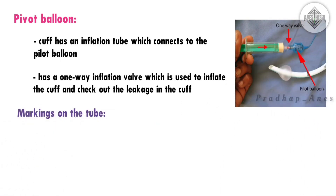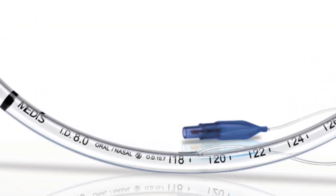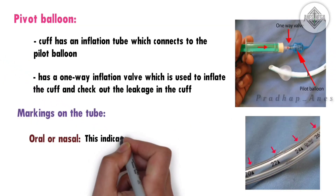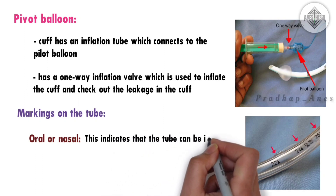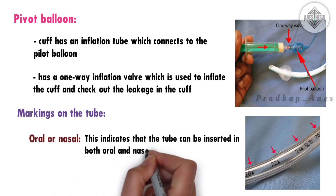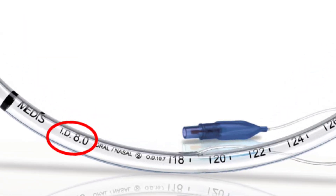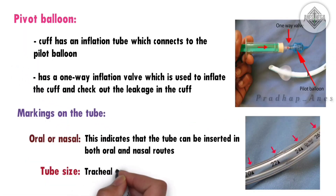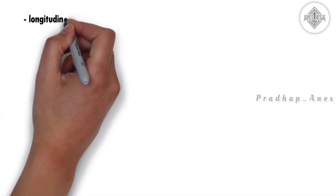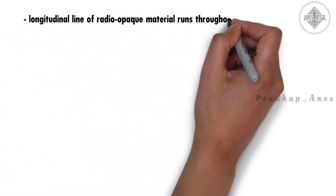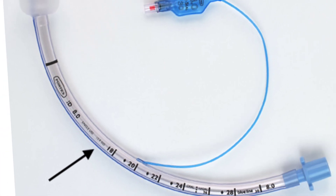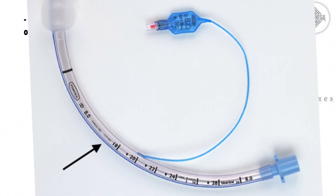Markings on the tube. First, you can see the words oral or nasal, which indicates that the tube can be inserted via both oral and nasal routes. Then we can see the tube size. Tracheal tube size is either in millimeters internal diameter (ID), or French scale size — three times the external diameter in millimeters. Finally, we have a longitudinal line of radio-opaque material that runs throughout the length of the tube for confirmation of correct placement from an X-ray.